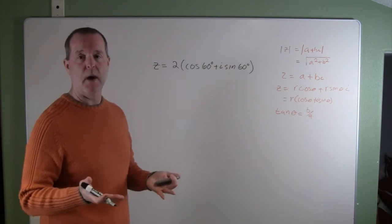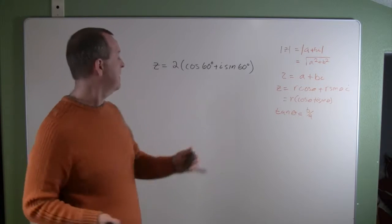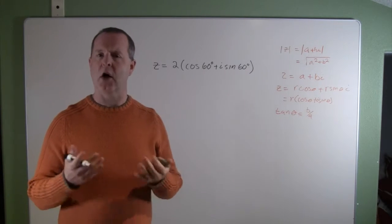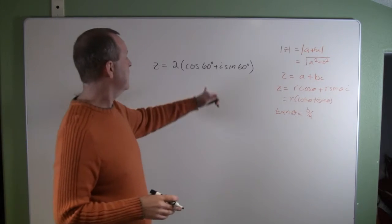A couple things I identify right away: I can observe what the modulus is, that's the value of r, in this case it's 2, and I know what its argument is. The argument represents theta, in this case it's 60 degrees.